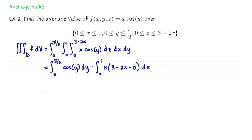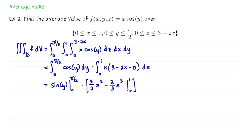After peeling cos(y) out front, the remaining integrand is x dz, and since x is constant with respect to z, anti-differentiating gives x times the width of the z-interval. Anti-differentiating cos(y) gives sin(y); evaluating from 0 to π/2 gives 1. The remaining integral is the polynomial 3x − 2x², which anti-differentiates to 3x²/2 − 2x³/3. Evaluating from 0 to 1 gives 3/2 − 2/3 = 5/6. So the integral of f over this domain is 5/6.